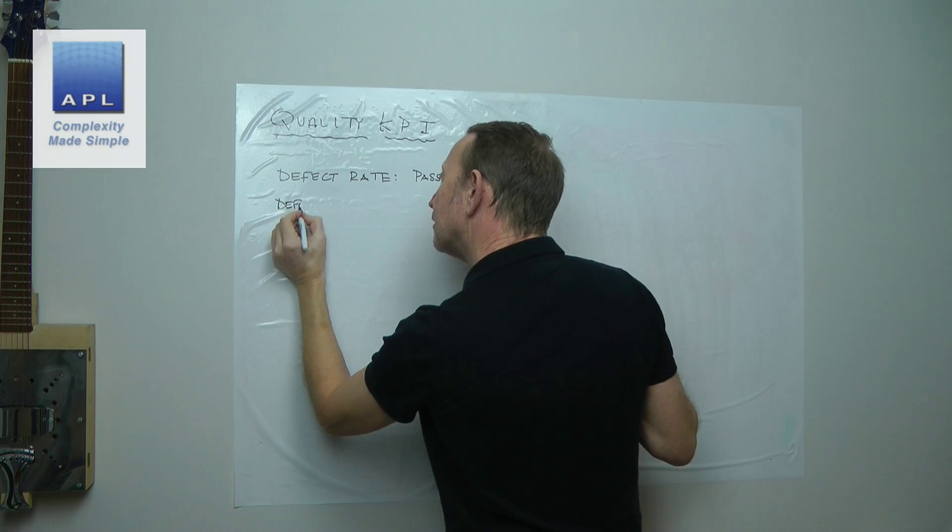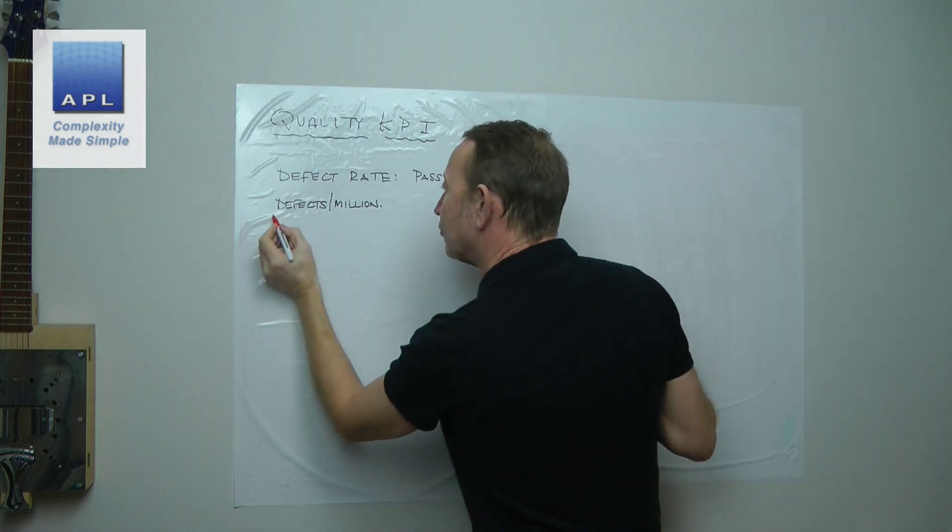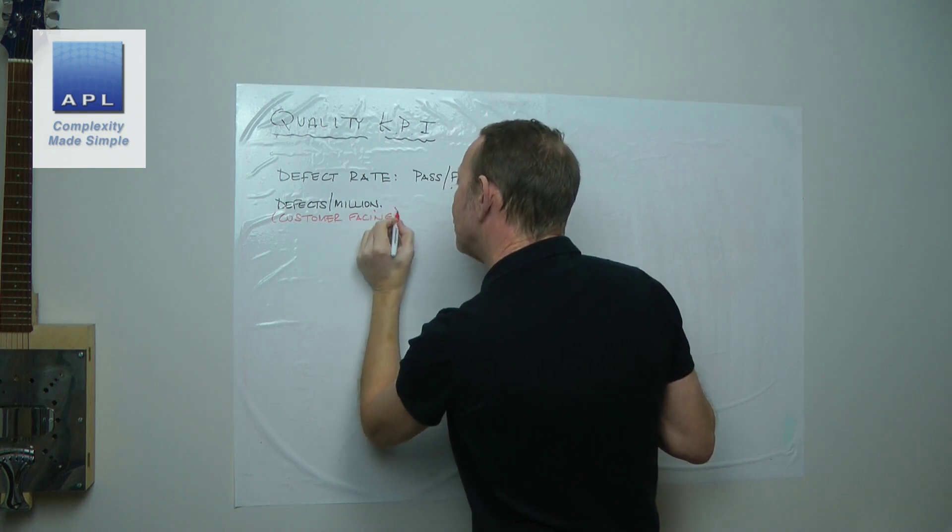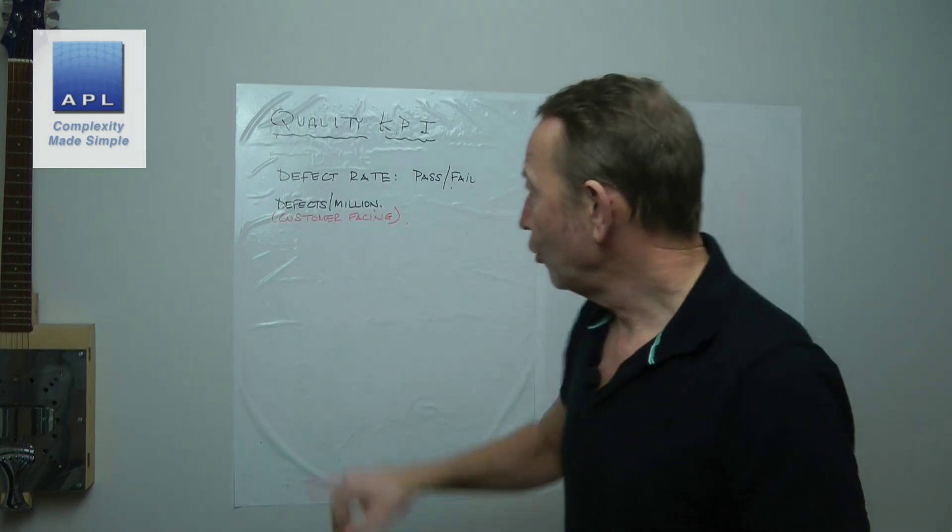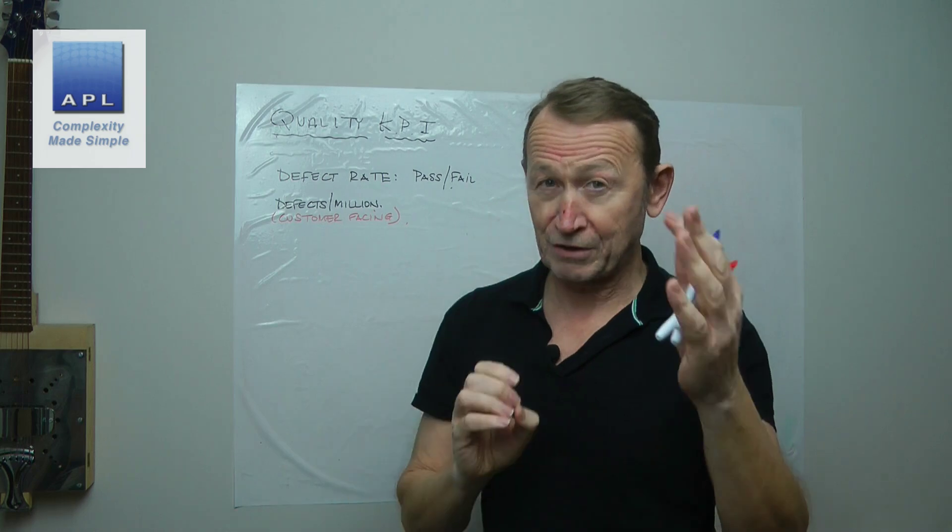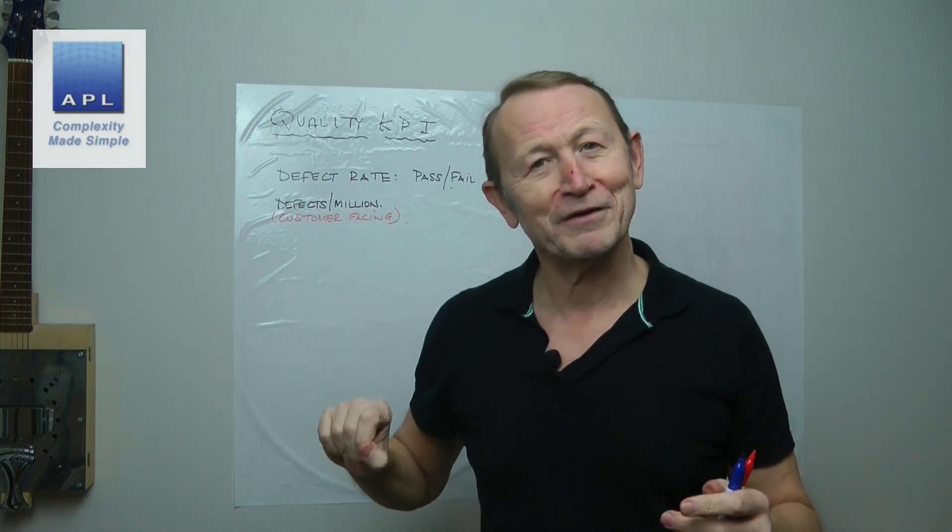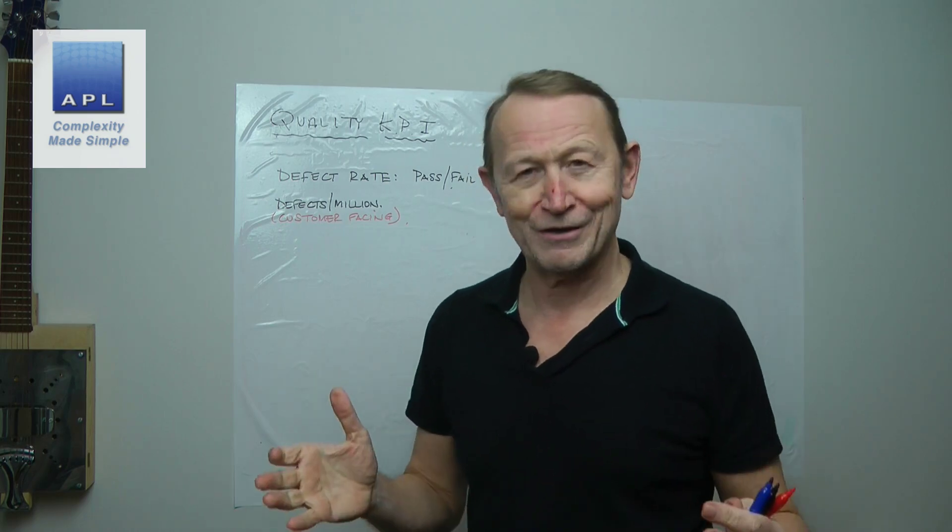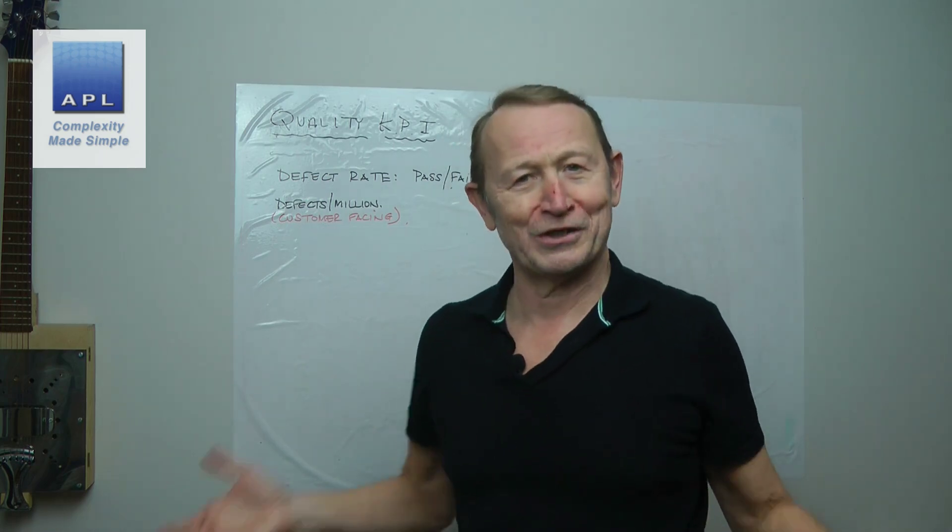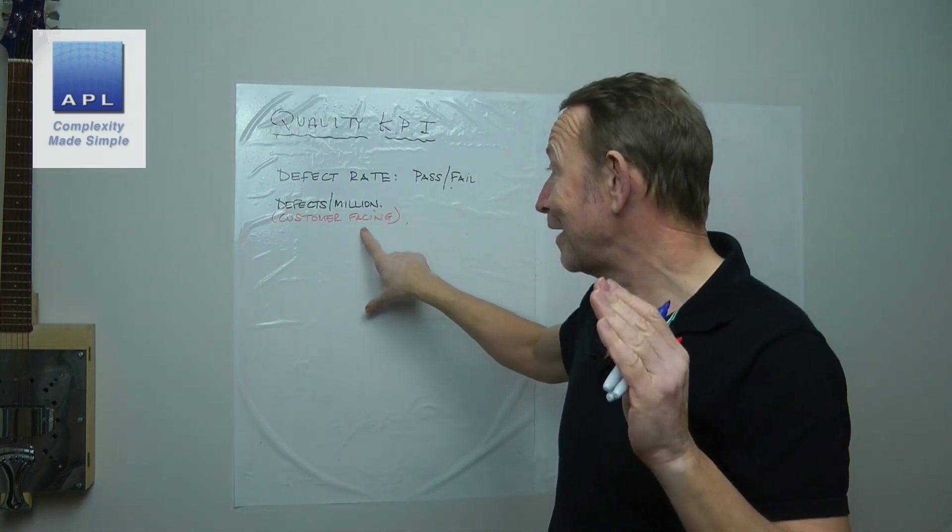Then they go defects per million. Now that usually is customer facing. So usually we do that with customer returns. Don't tend to use that internally often. Why do you tend to use defects per million? Because, and this is especially true in high volume, when you're making high volume, let's say you make a million cars in a year, this number is the number of pissed off customers you've got. So that's especially good in high volume, especially good customer facing.